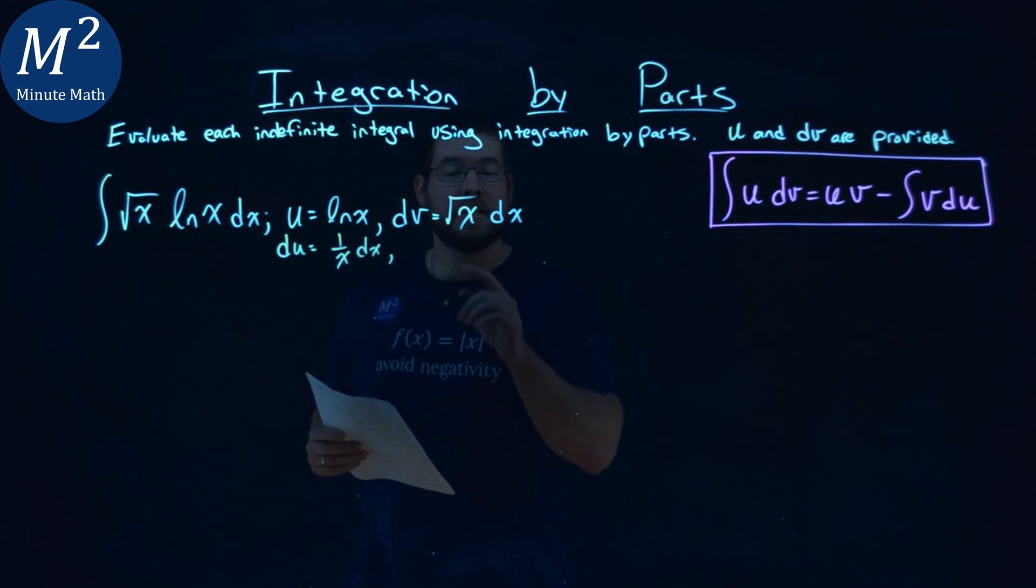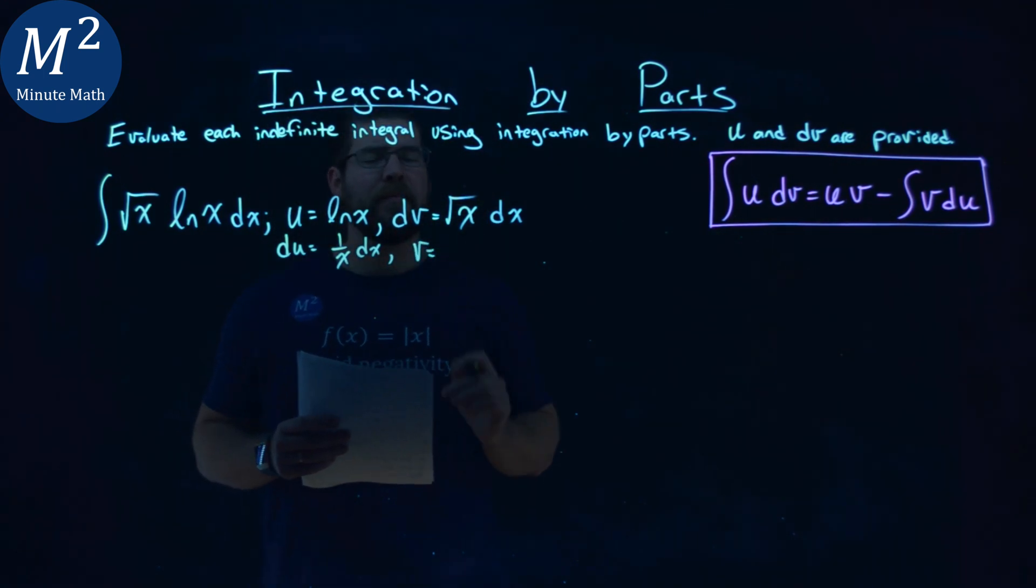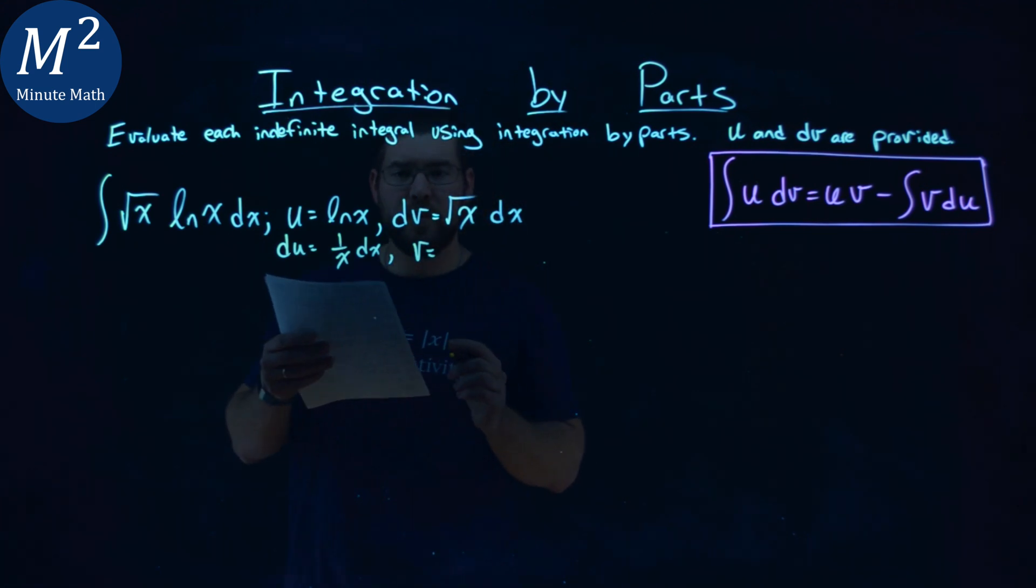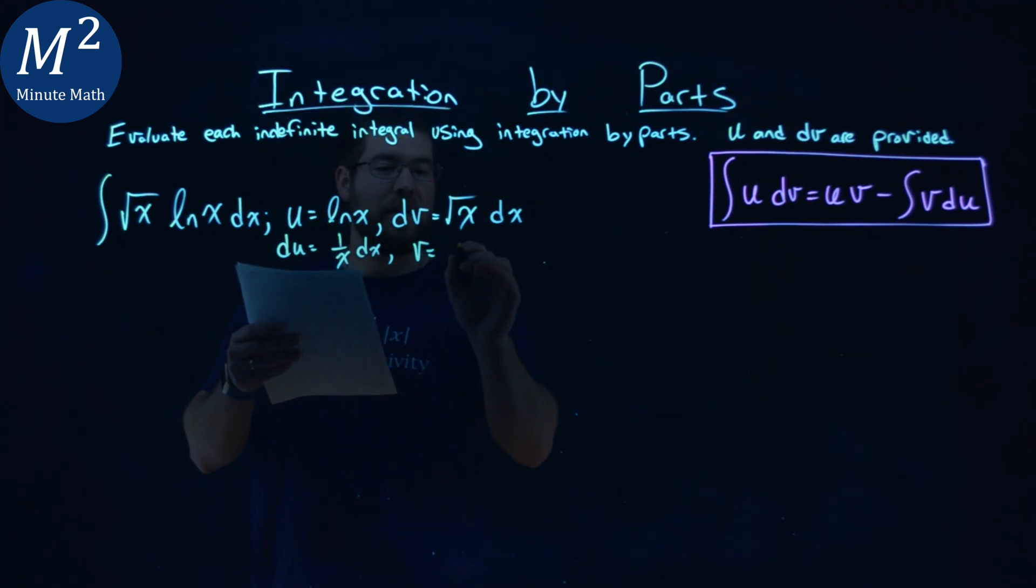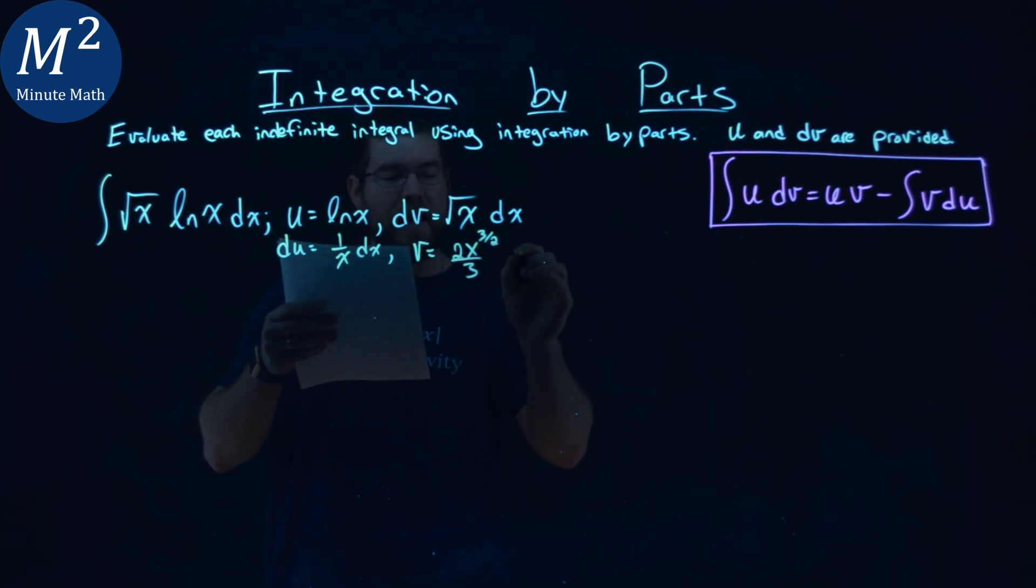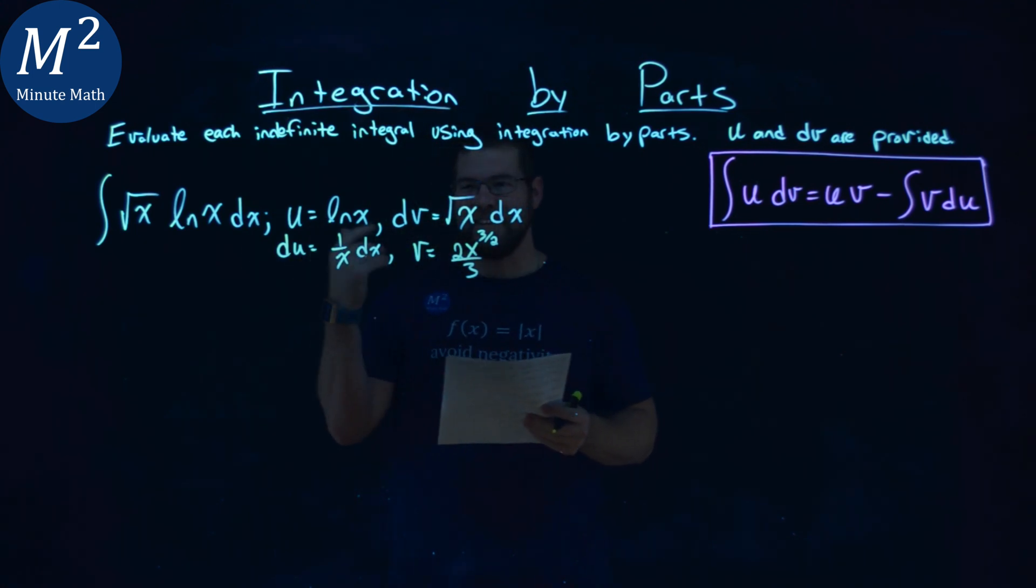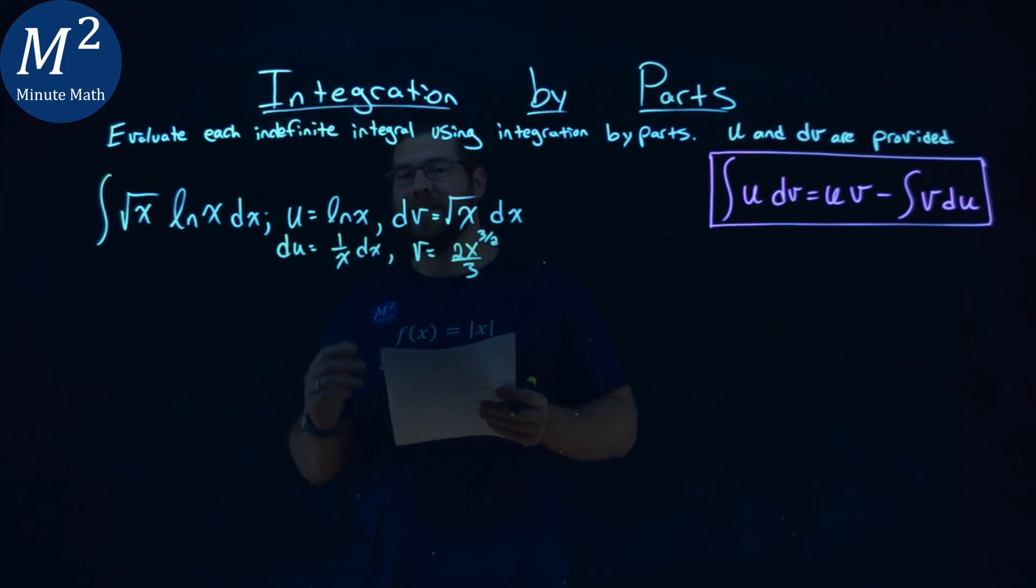Now, the integral of dv we need to find. Remember, square root of x is x to the 1 half power, so the integral of square root of x is x to the 3 half power, and we put 2 thirds out front, right here. And then don't forget, we're not going to do the plus c yet, we'll add it later.